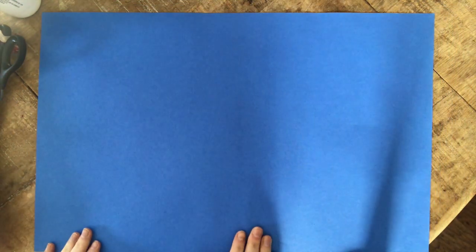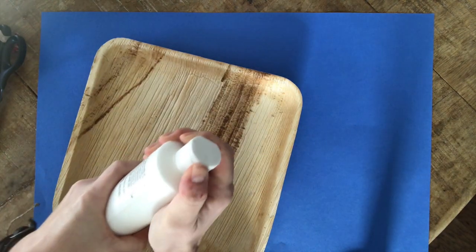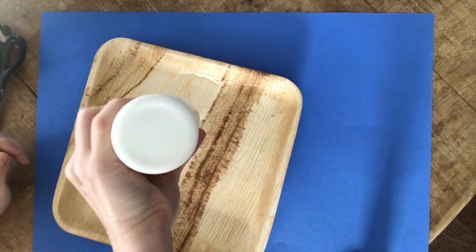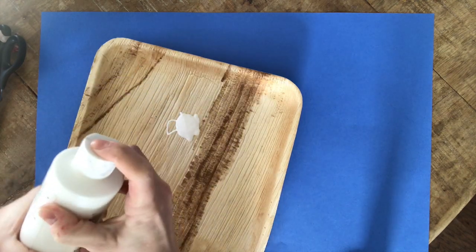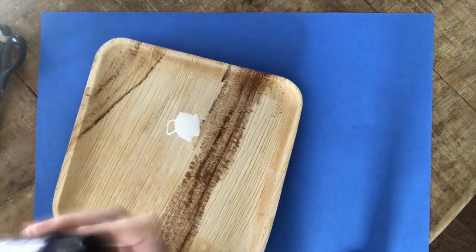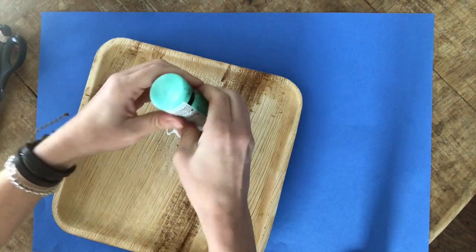You're going to take your paint and squirt them onto your plate. Put the colors close together. You can use two, three, four, or however many colors you have at home.